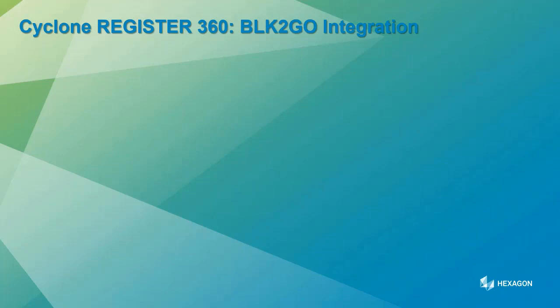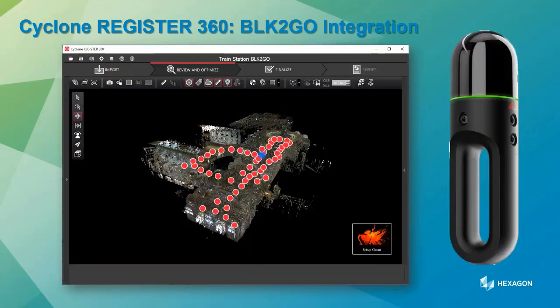In Reg360, the first feature is BLK2Go integration. The BLK2Go is a handheld mobile mapping device — you turn it on, press a button, start walking, and optionally use the BLK2Go live app to collect data. What you can see here are waypoint markers along the trajectory, which are created at the point of import. I'll show you that live in a demo shortly.